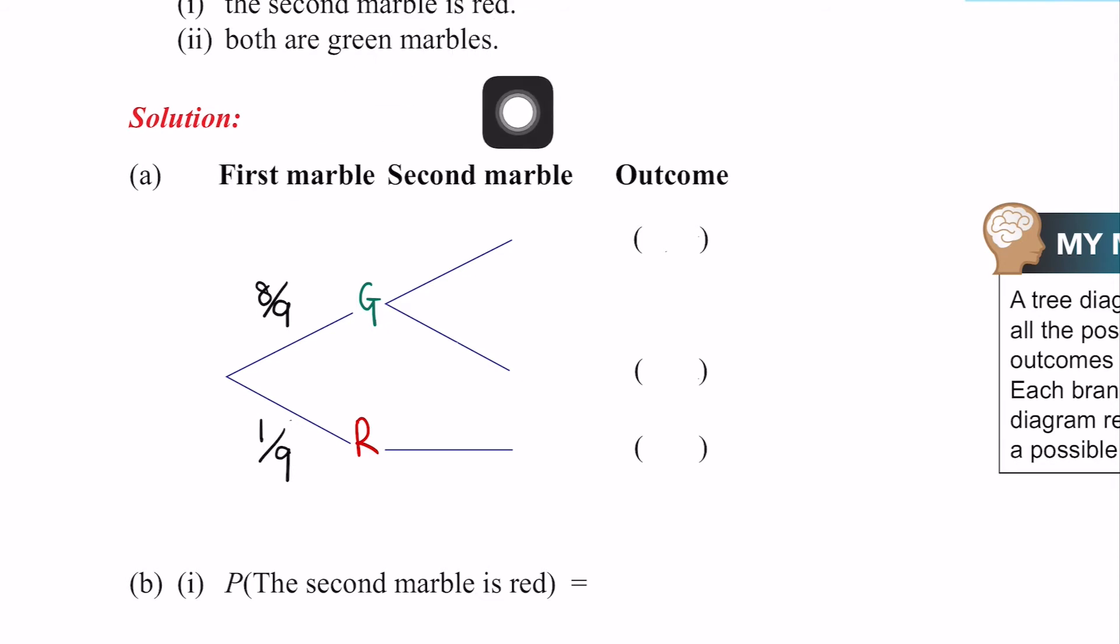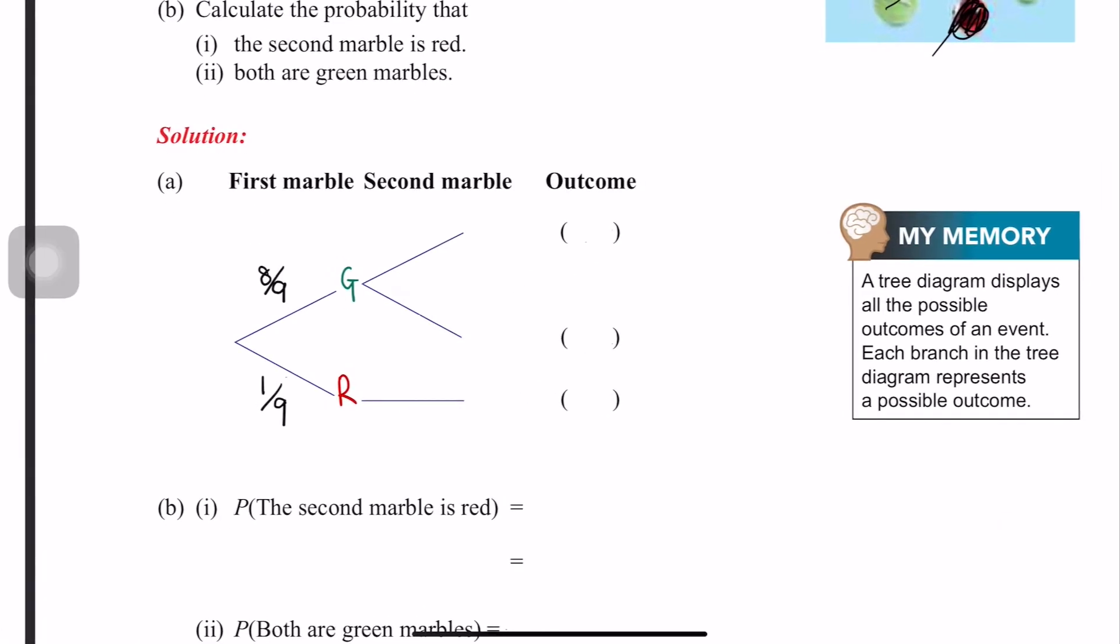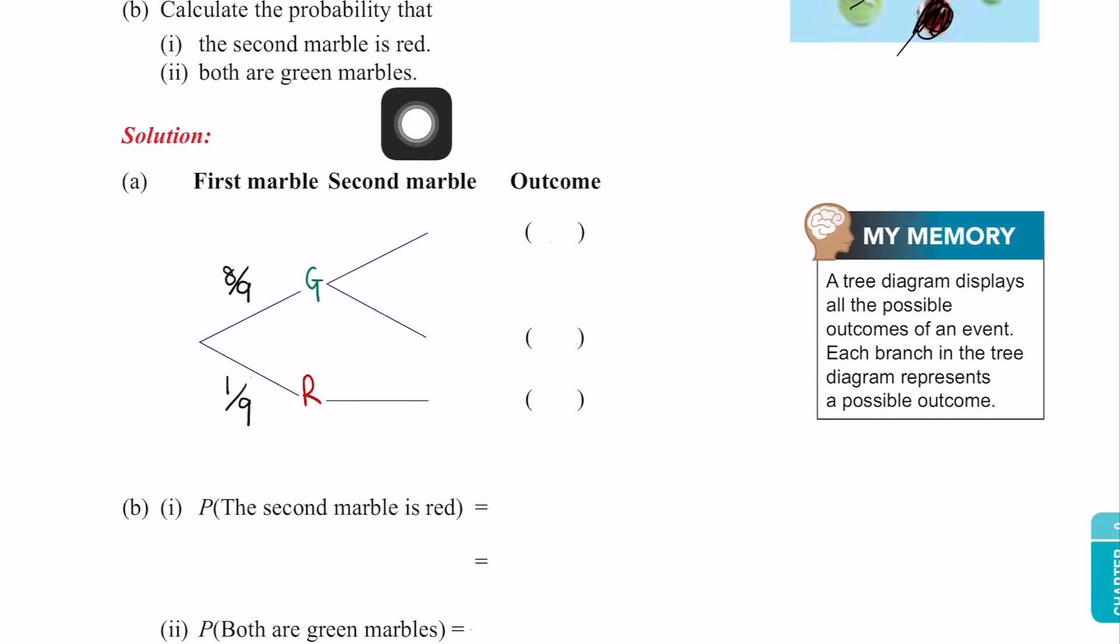Next, the second marble. From the first, there were 9, right? I already pulled out 1. I already picked 1. So how many marbles are left? 8, right? For example, I already took 1 red. How many are left? 1, 2, 3, 4, 5, 6, 7, 8.